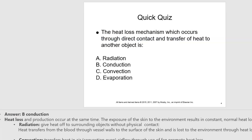This presentation starts with a video which you'll need to watch to understand the difference between radiation, conduction, convection, and evaporation. We know that in our bodies heat loss and production occur at the same time. Exposure of skin to the environment results in constant normal heat loss through radiation — we give off heat to surrounding objects without physical contact. Heat transfers from blood through vessel walls closer to the surface of the skin and is lost to the environment. Convection transfers heat in the air; airflow through a fan promotes heat loss, similar to how a fire heats a stove and the stove gives off heat.